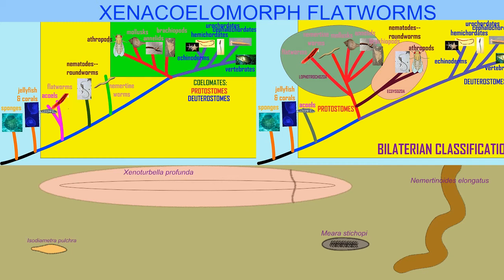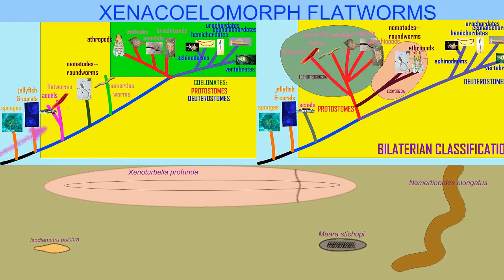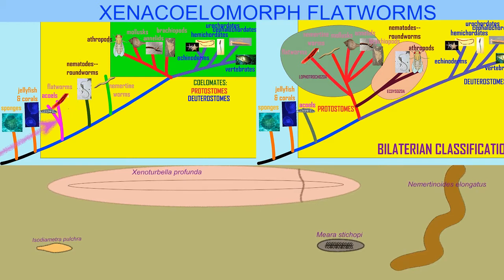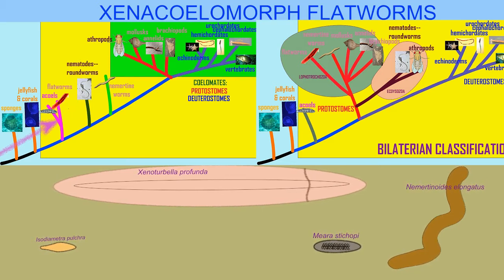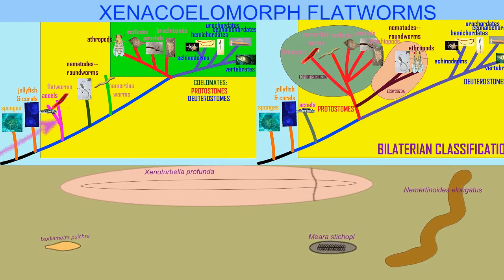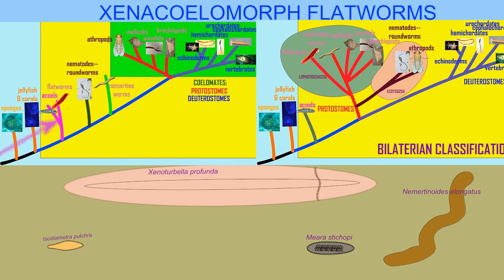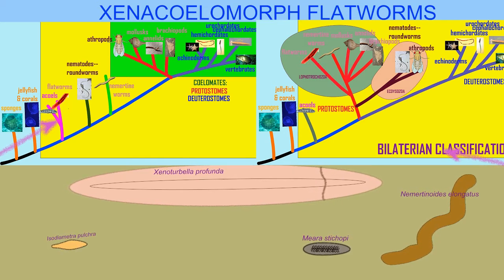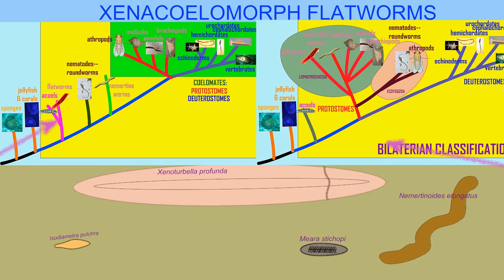While primitive flatworms like acoels were classified previously with the phylum Platyhelminthes as basal bilaterians branching off the family tree shortly after cnidarians had previously branched off, the reorganization of bilaterian classification resulting from molecular studies now places these acoels...